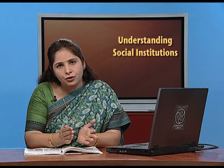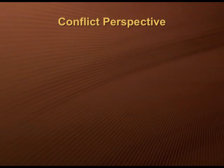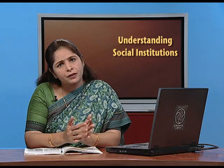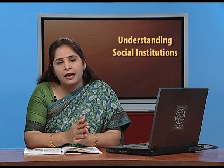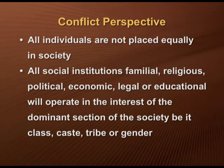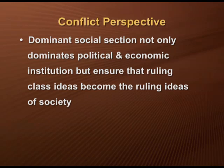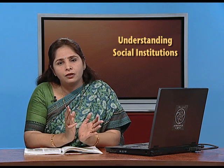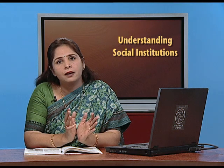If we look at social institutions from the conflict viewpoint, the conflict view holds that all individuals are not placed equally in society. There is one dominant class that exerts pressure on other people. All social institutions — whether familial, religious, political, economic, legal, or educational — will operate in the interest of the dominant section of society, which could be defined by class, caste, tribe, or gender. This dominant social section not only dominates political and economic institutions, but most importantly ensures that the ruling class ideas become the ruling ideas of the society.